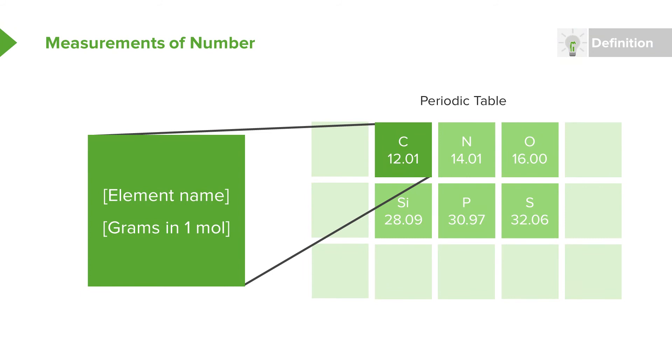So that you're able to use this very practically, something that you will need to know is that the way the periodic table is often written is to give the element name. For example, we have carbon and nitrogen and oxygen listed here. And then below the element name to list how many grams of that atom would be in one mole of that atom.